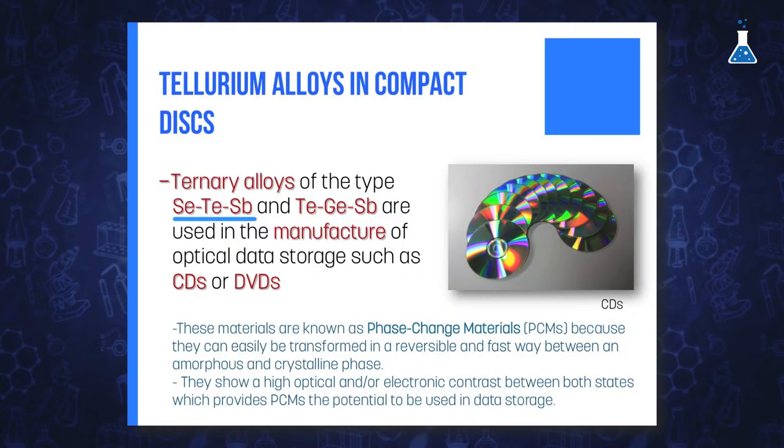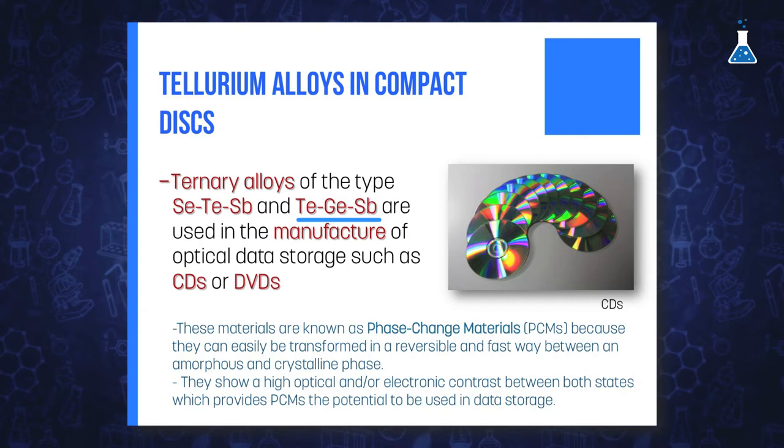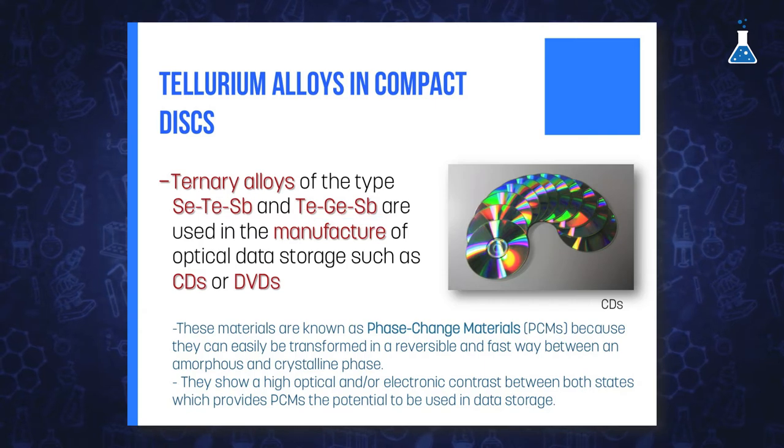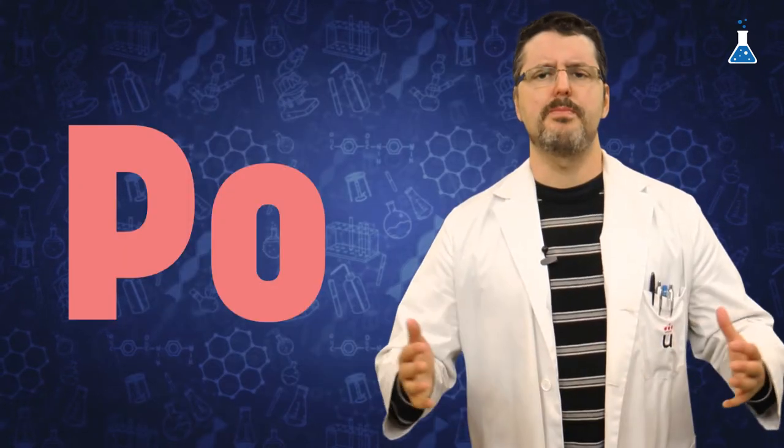Finally, it is interesting to note the use of a ternary alloy of the type Selenium-Tellurium-Antimony and Tellurium-Germanium-Antimony in the manufacture of certain compact discs. With respect to Polonium,